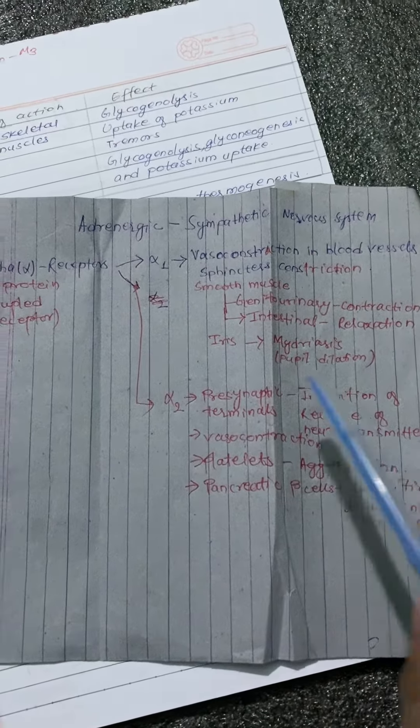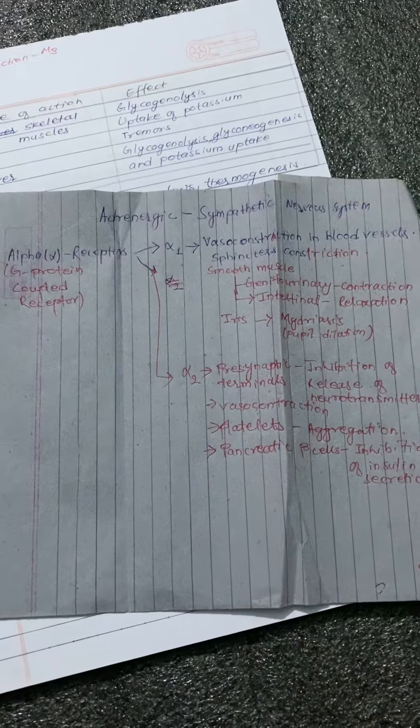Not to forget, in case of alpha 1 receptors, it causes vasoconstriction in blood vessels. In case of alpha 2 receptors, it causes the inhibition of release of neurotransmitters in presynaptic terminals. Thank you.